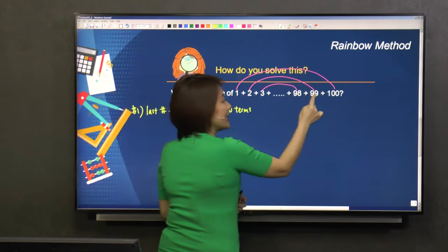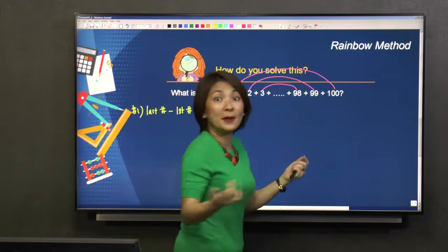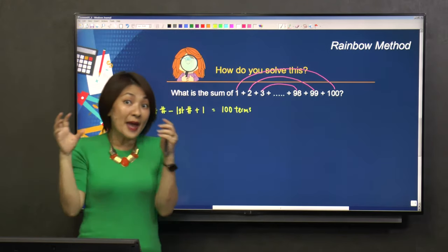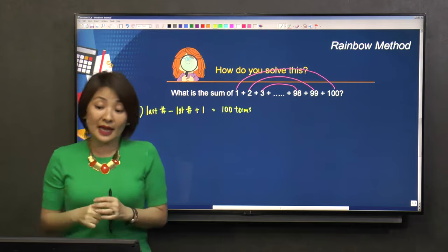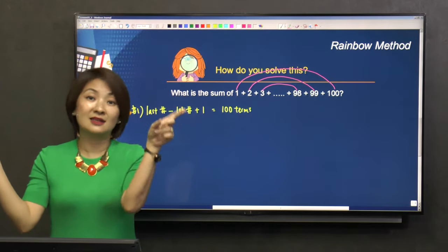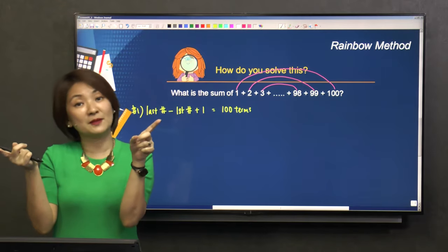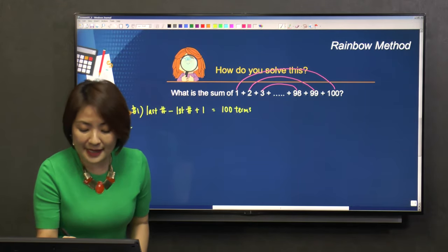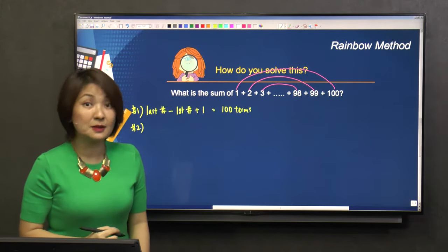Take 1 + 100, 2 + 99, 3 + 98. What am I actually doing? I'm pairing the numbers up. Pairing the first from the beginning and the first from the last, second from the beginning and second from the back. So my second step is pairs.